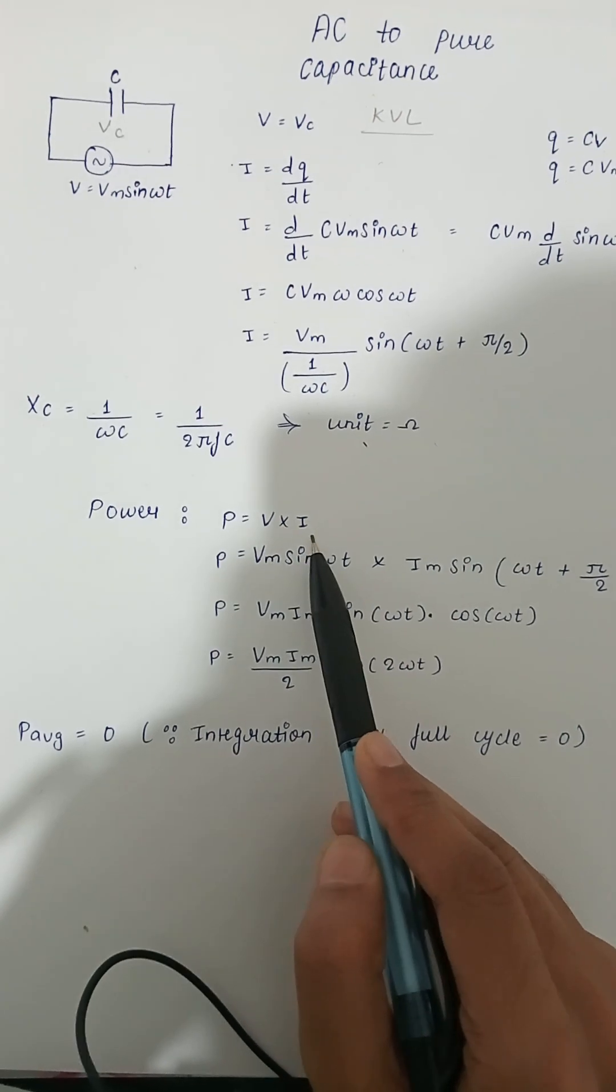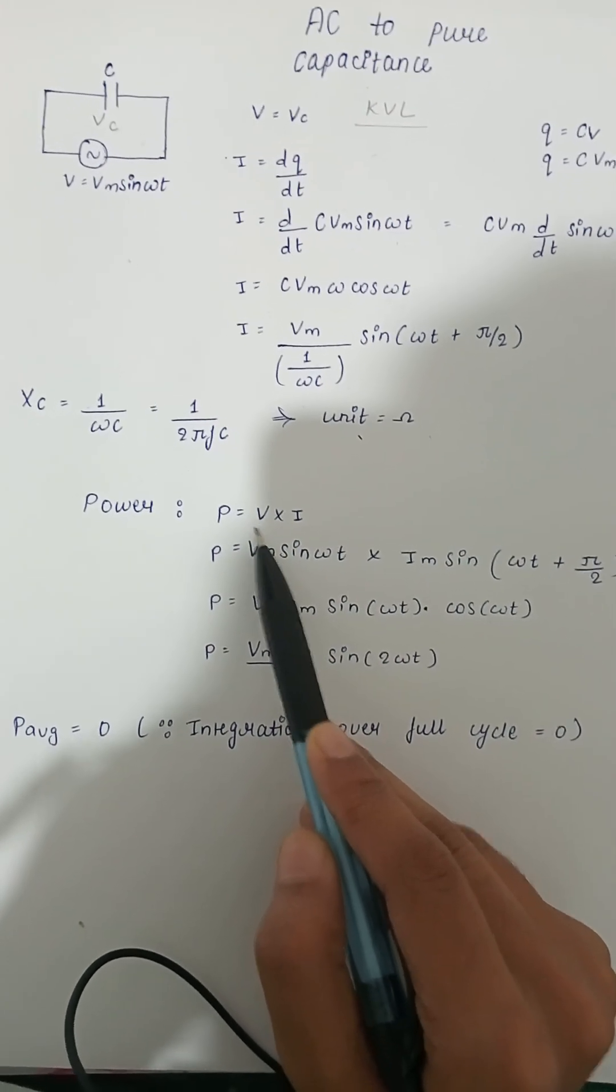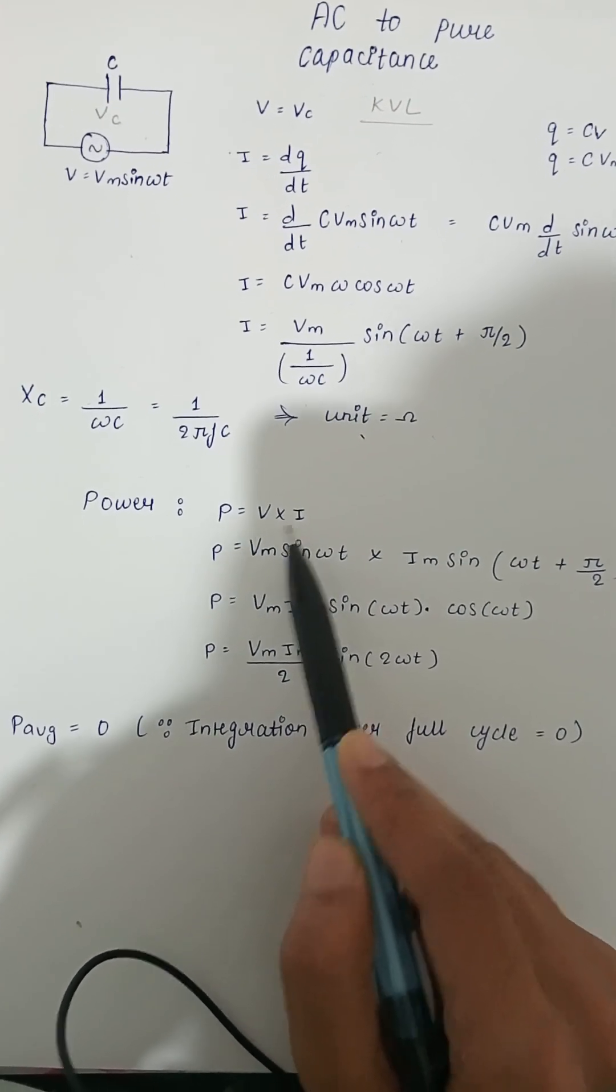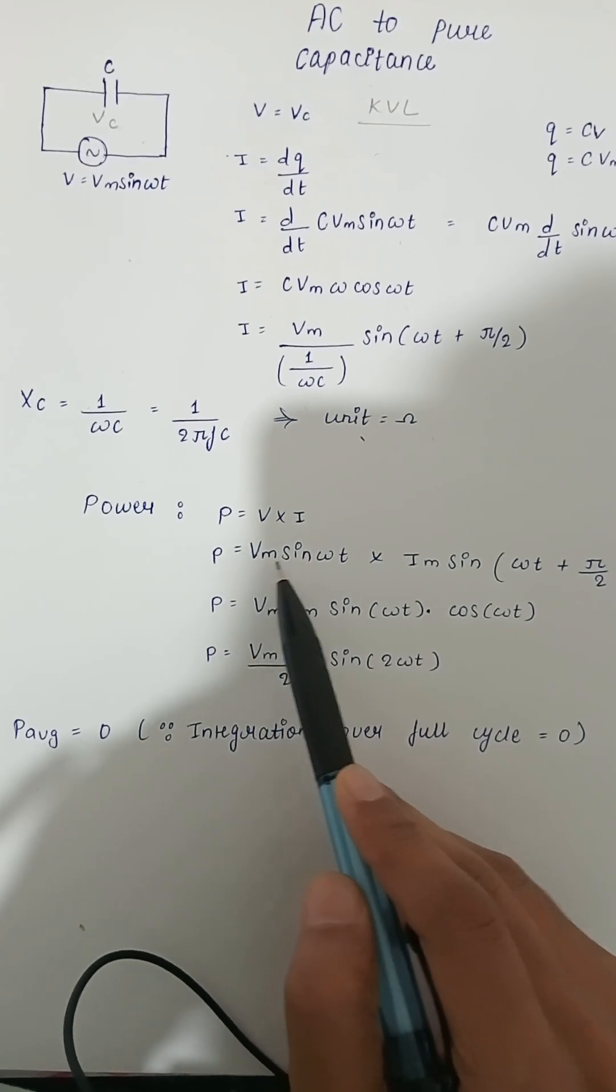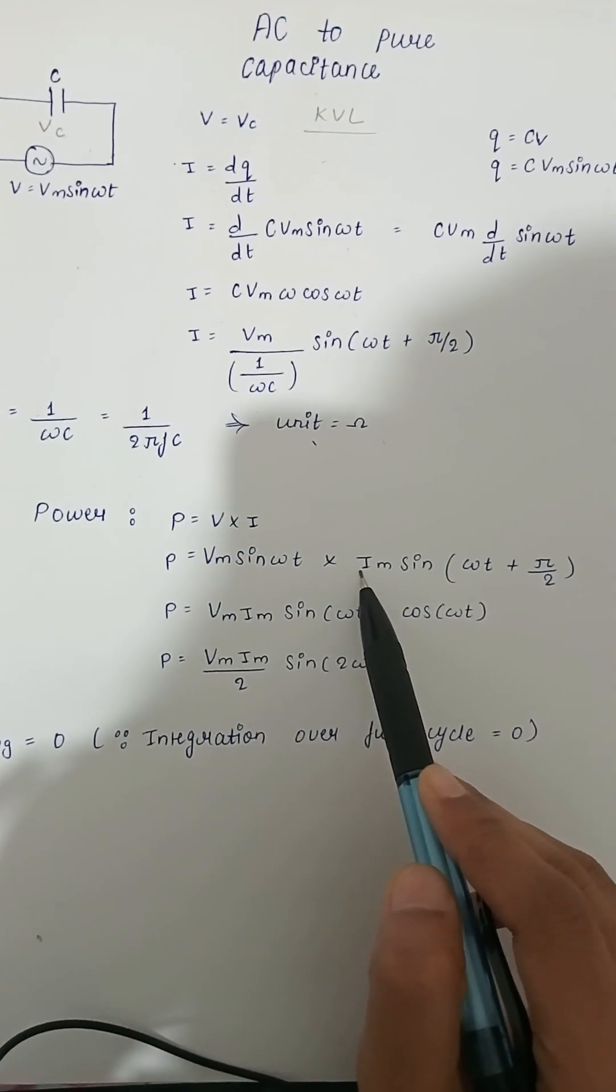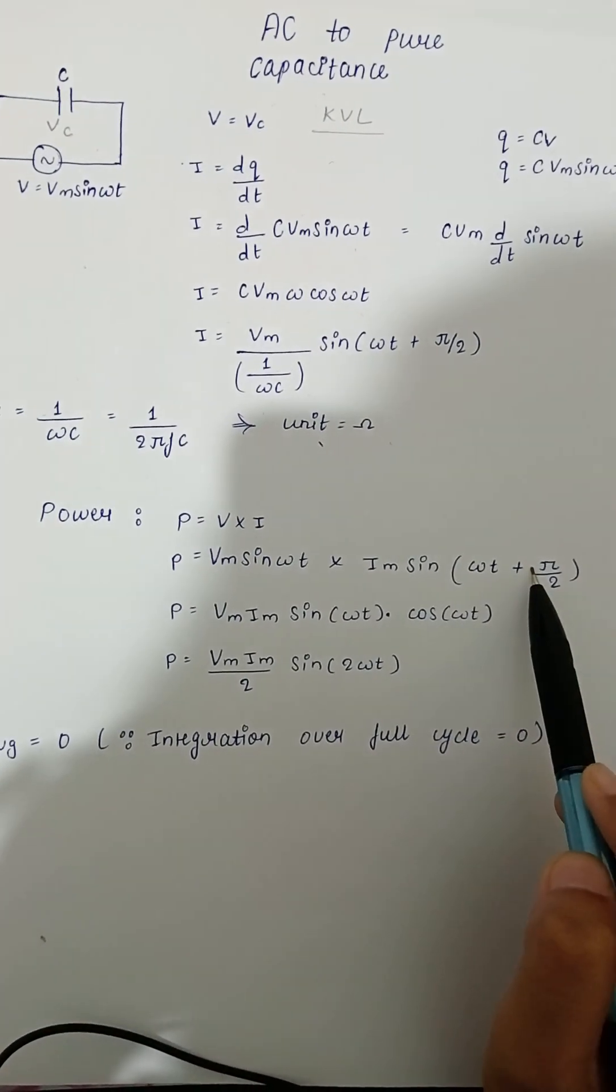Power is equals to V into I. This is instantaneous voltage and this is instantaneous current. So power is equals to Vm sine omega t into Im sine omega t plus pi by 2.